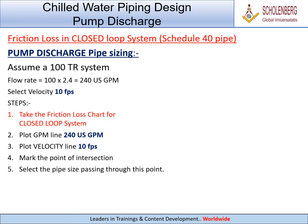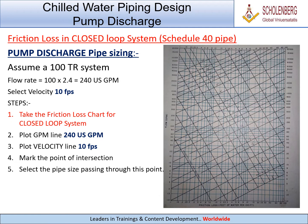Steps: 1. Take the friction loss chart for closed loop system. 2. Plot GPM line — 240 US GPM. 3. Plot velocity line — 10 FPS.